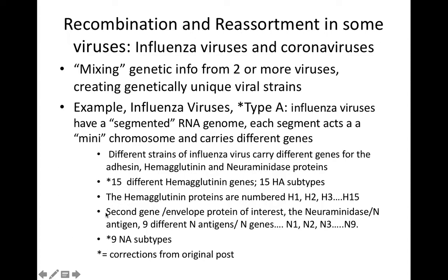The second gene of interest is for another envelope protein, the neuraminidase — the so-called N-antigen. Neuraminidase is important in helping influenza viruses escape from their host cells after replicating. There are nine different N-antigens, numbered N1 through N9 subtypes.